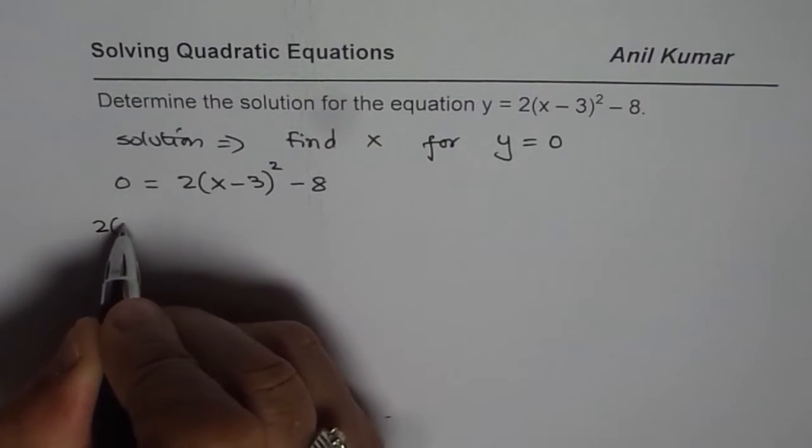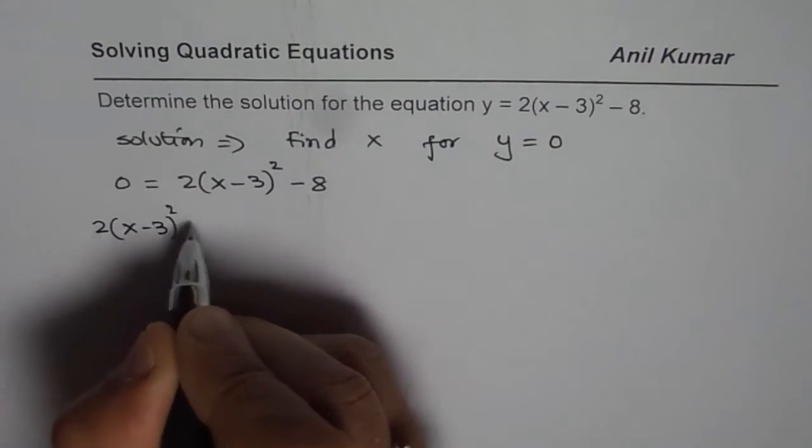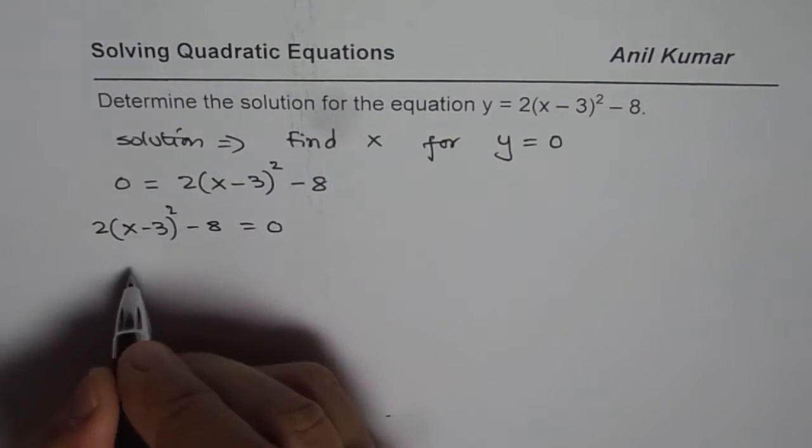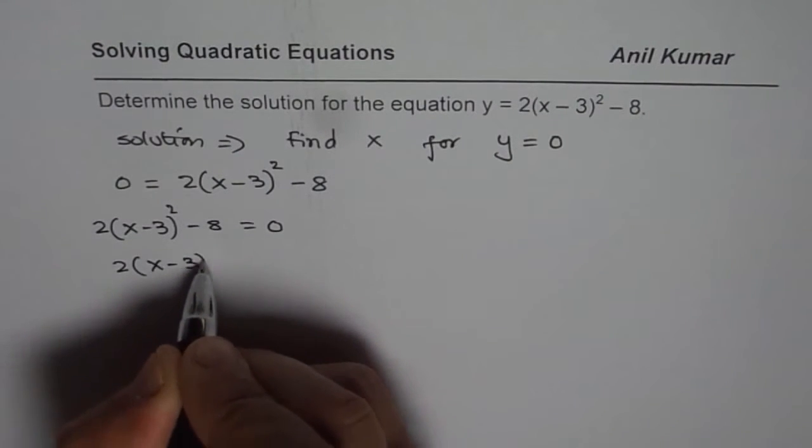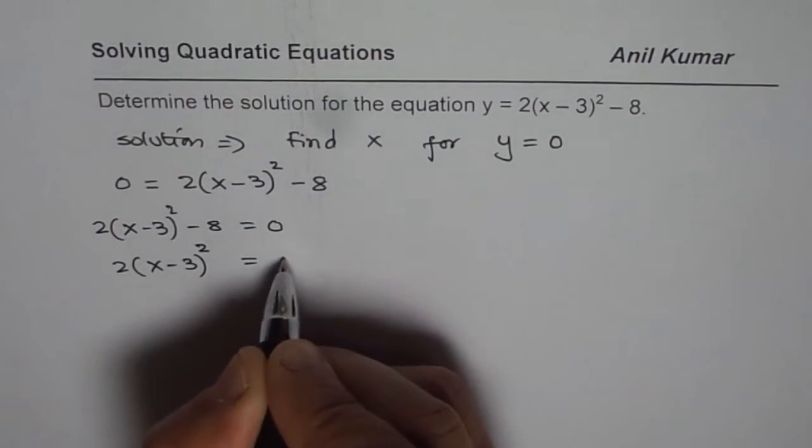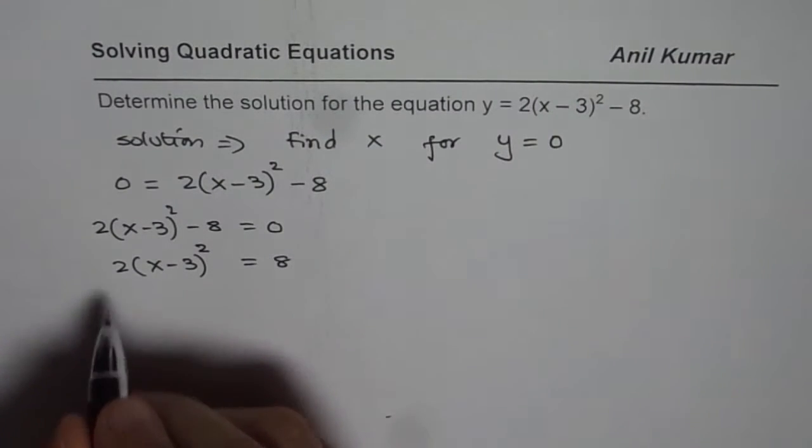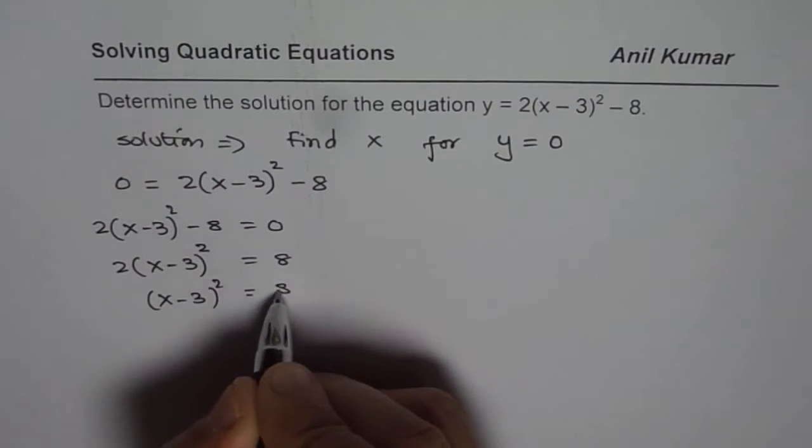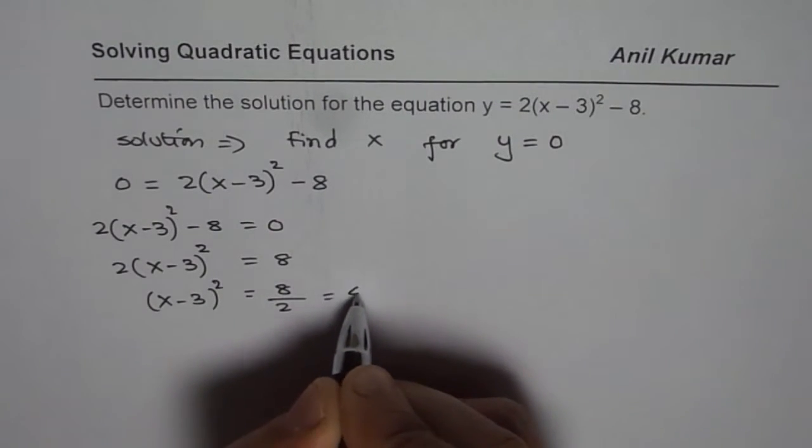So we have 2 times x minus 3 whole square minus 8 equals 0. We will bring 8 to the right side. That is the first step. 2 times x minus 3 whole square equals plus 8. Now we will divide by 2. x minus 3 whole square equals 8 divided by 2 which is 4.